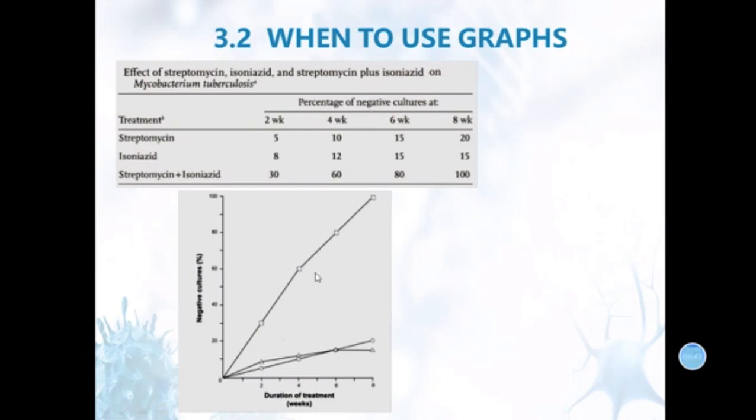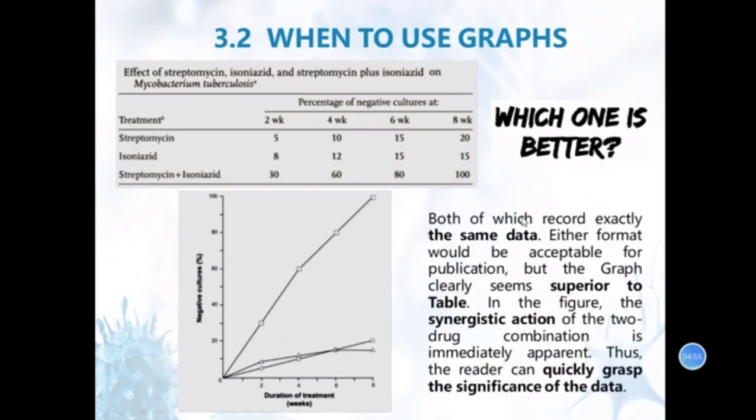Here is an example. The above is a table, the below is a graph. This one is better, do you think? I guess this one is better. Both of these contain exactly the same data. Either form would be acceptable for publication. But the graph clearly seems superior to the table because they have some trends. See? In the figure, the axis of the graph combination is immediately apparent. From here, you can see it's apparent. Thus, the reader can quickly grasp the significance of the data.